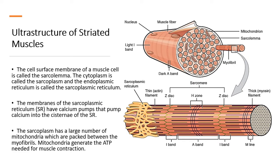When you zoom in to muscles, this is what the structure of a muscle fiber looks like. From one Z-disc to the next, we call that a sarcomere — basically a section of a muscle. The cell membrane of a muscle cell is called the sarcolemma, the cytoplasm is called the sarcoplasm, and the endoplasmic reticulum is called the sarcoplasmic reticulum. The membranes of the sarcoplasmic reticulum have calcium pumps. The sarcoplasm also has a large number of mitochondria, which are important for muscle contractions.